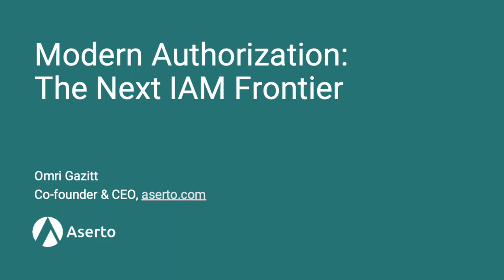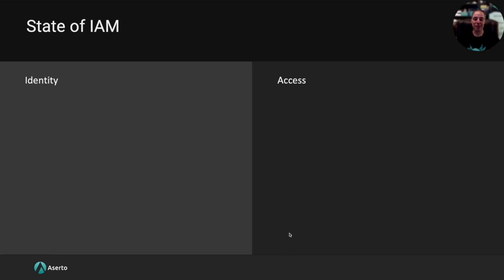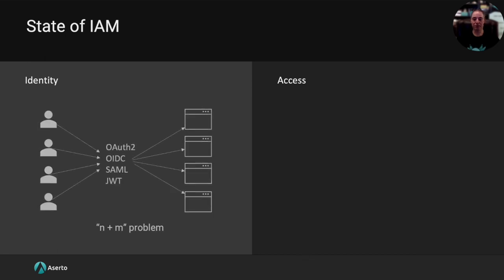Let's talk about the state of affairs in identity and access. In the identity world, things are pretty good. We've largely solved the problem of single sign-on for SaaS applications. No one remembers the days where users had different user IDs and passwords for each SaaS application, because now we have single sign-on systems. Anytime you add a user to your single sign-on system, they have access to applications.